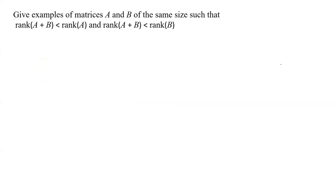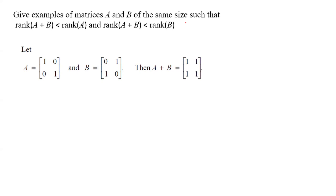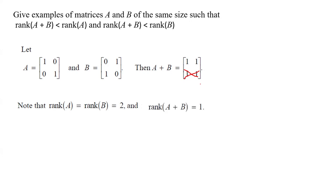In this question, give examples of matrices A and B of the same size such that rank(A+B) is less than rank(A) and rank(A+B) is less than rank(B). Let A be the identity matrix and B be the matrix with the rows of the identity swapped. Adding them gives a matrix with all equal entries; applying elementary row operations, the rank of A+B equals 1, while rank(A) and rank(B) are both 2. So rank(A+B) does not equal rank(A) + rank(B).